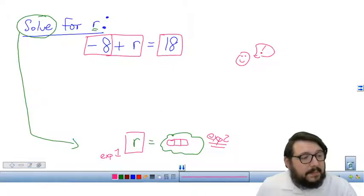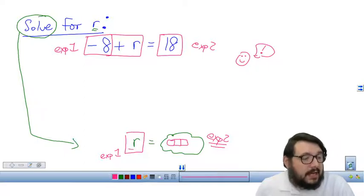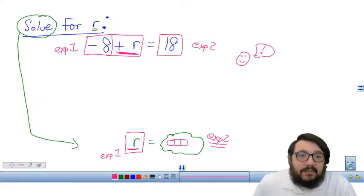Look, which piece am I going to keep in expression number one? Let's label these expression number one and expression number two. Which part am I going to keep in expression number one? Well, I need an R. And I have an R. So in expression number one, I need to keep the R. So that means what do I need to get rid of? Well, I need to get rid of the negative eight term.